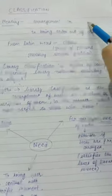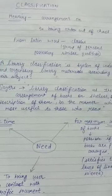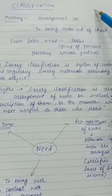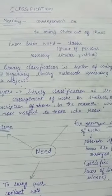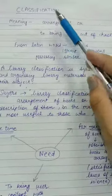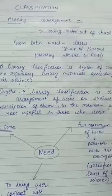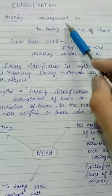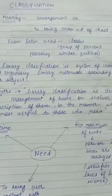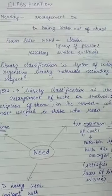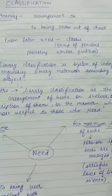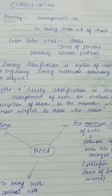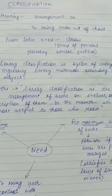Hello friends. Today I am going to talk about library classification. First of all, what is the meaning of the word classification? Classification means arrangement — to arrange something in a specific order according to the class or type of object.